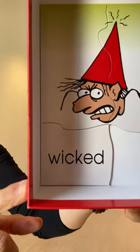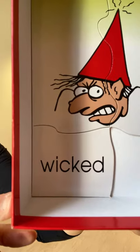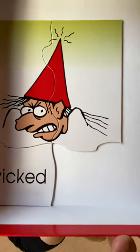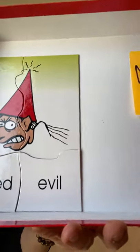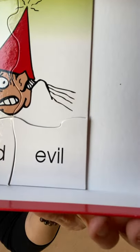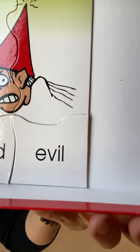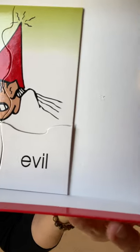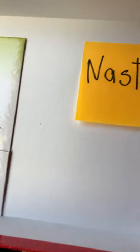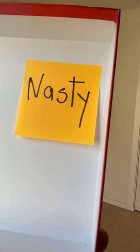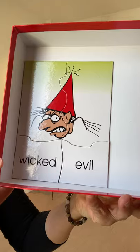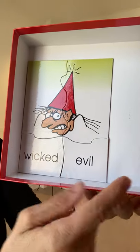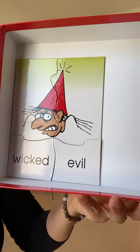We can label the person as wicked, evil, or nasty. These are all labels that we can give to this image.